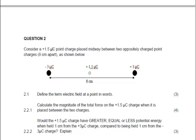Question 2: Consider a positive 1.5 microcoulomb charge placed midway between two opposite charge points — minus 3 microcoulombs and plus 3 microcoulombs — 8 cm apart. Since it's placed midway, this must be 4 cm on each side.